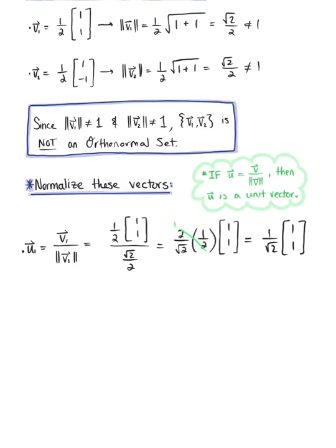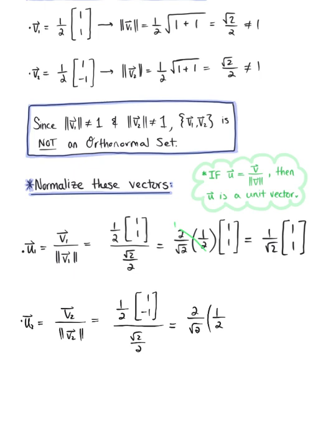For vector v₂, let's define u₂ as v₂ divided by the magnitude of v₂. This equals 1/2 multiplied by the vector with components 1, negative 1, divided by √2/2, which simplifies to 2/√2 multiplied by 1/2 times the vector 1, negative 1. The 2's cancel, leaving us with 1/√2 times the vector with components 1, negative 1.